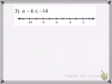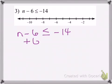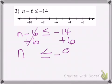Number 3, n minus 6 is less than or equal to negative 14. Just like an equation, add 6 to both sides to get the variable isolated. Negative 14 plus 6 is negative 8. Our variable is on the left, so that's good. It does say equal,